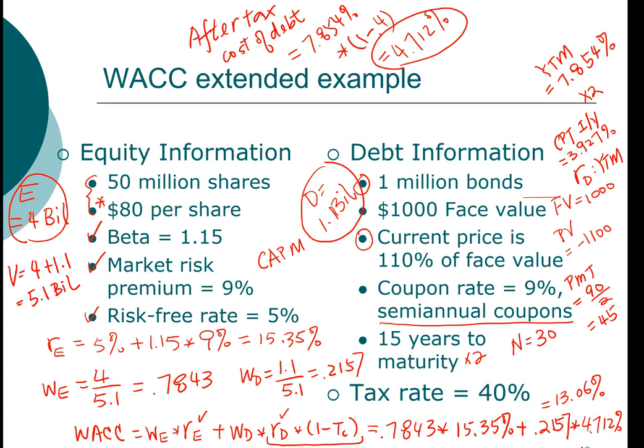This concludes our extended example of how to compute the weighted average cost of capital for a firm covering every single component. There are additional slides after this that provide step-by-step calculations. Pause the video and go to the following slides to make sure you understand how to compute every single step. In the next video, we're going to address additional concerns to pay attention to when computing weighted average cost of capital to perform capital budgeting analysis.